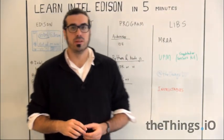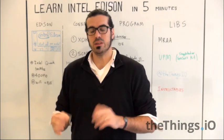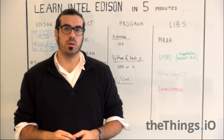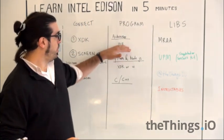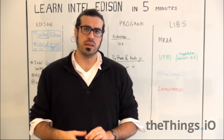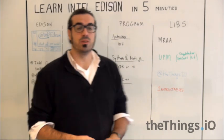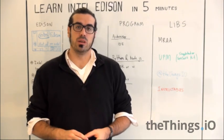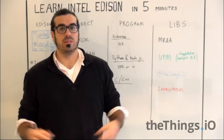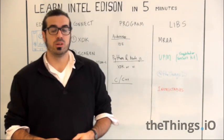The third step is how to program it, and this depends on what kind of breakout you have and what technology you prefer. You have the choice to program in Arduino if you have the Arduino breakout or the mini breakout from Intel. For Arduino, download the latest Arduino IDE or the special version from Intel's website for the Edison. For C and C++, download the Eclipse version from the Intel Edison website. For Python or Node.js, you can use the XDK or, as I did, VI or any Linux editor you like. It works pretty well and is very easy.